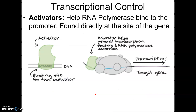We also have activators. This diagram shows what an activator would do — it's a protein factor that would help RNA polymerase bind. So if an activator was missing in a particular spot, it might prevent transcription from happening, or it would not happen as quickly or as often.